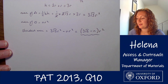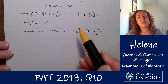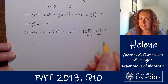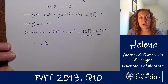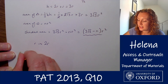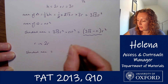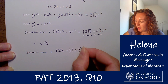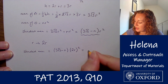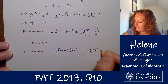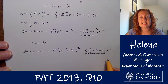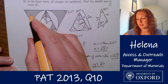We'd want to do exactly the same calculation, but to save time we can simply replace r with 2r in our expression, remembering to square it all, giving us the larger shaded area as (3√3 − π) × (2r)², which equals 4(3√3 − π)r².